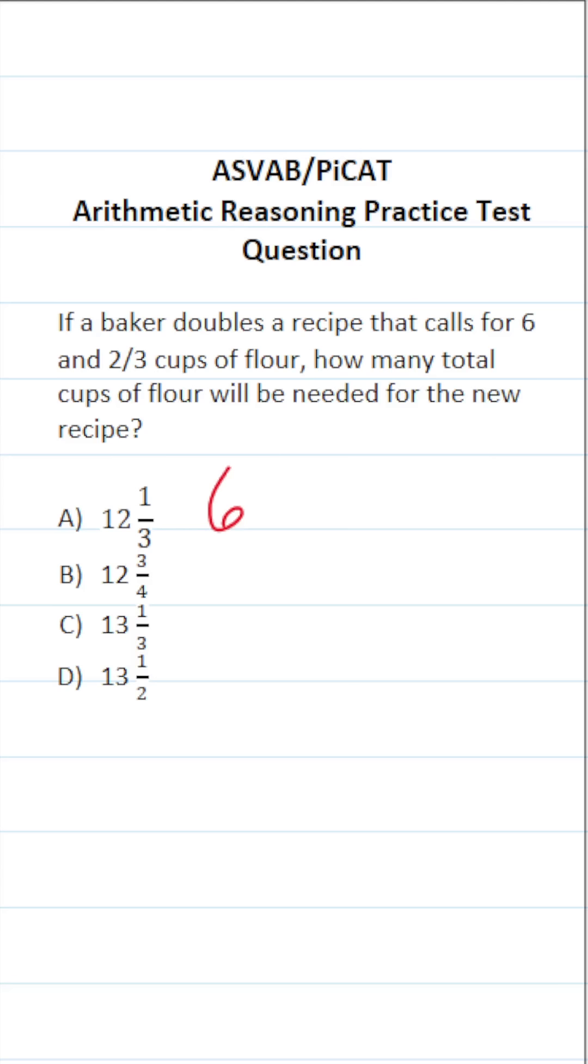So again, they have six and two-thirds cups of flour in the original recipe. Now they're going to double the recipe. That means they're going to multiply it by two. If you haven't worked with fractions in a long time, this can be pretty challenging, especially since you can't use a calculator or reference sheet on the ASVAB. So let's go ahead and see how we're going to solve this one.